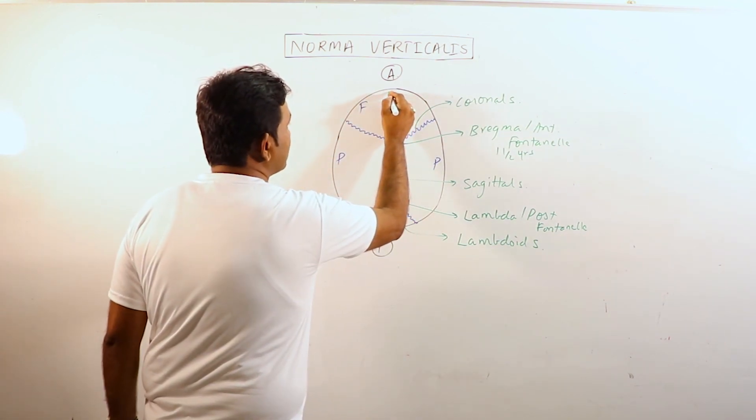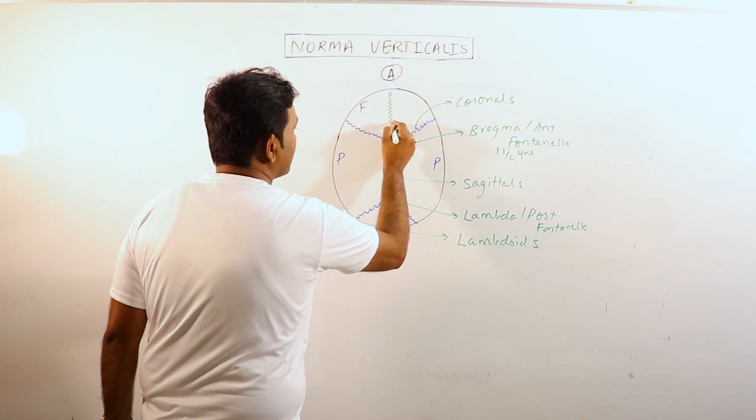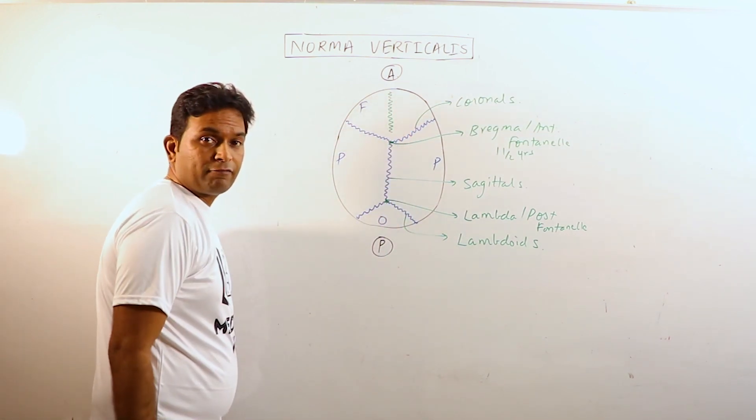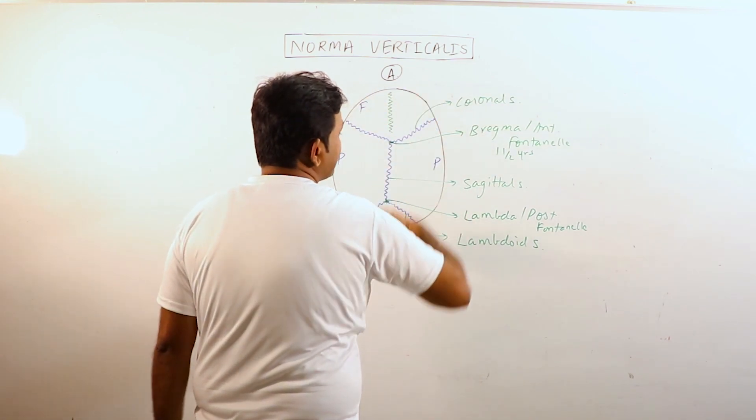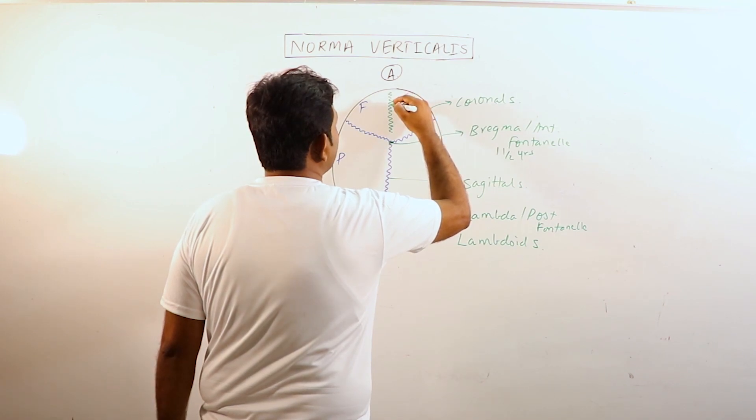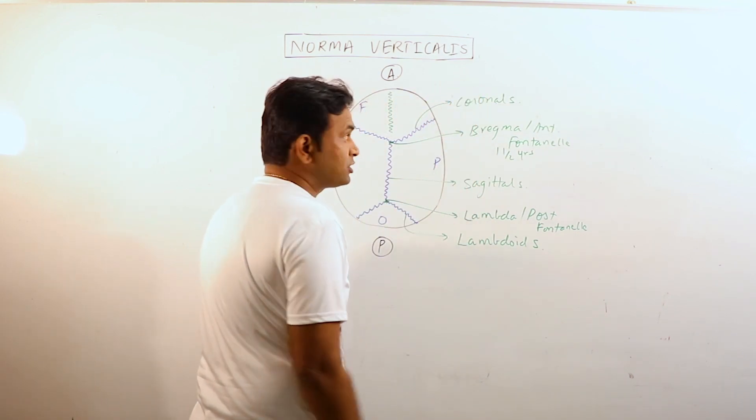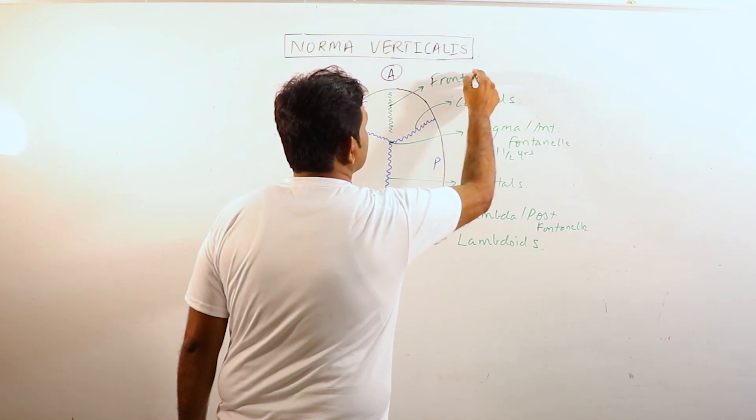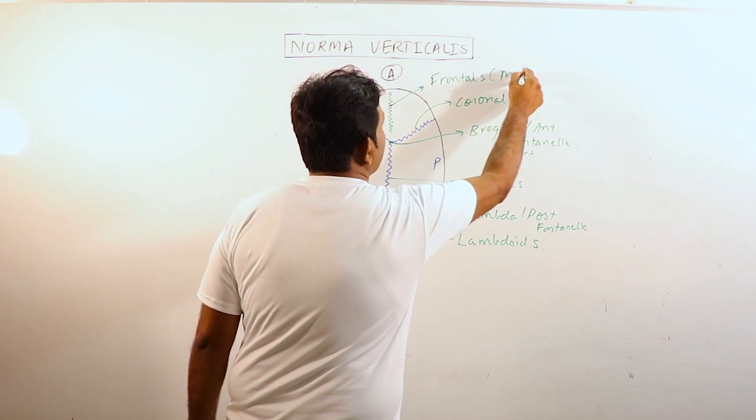Sometimes you may observe a suture which divides the right and left part of frontal bones. It usually gets closed by 3 to 9 months of age but it may persist in some individuals which may vary from 3 to 8%. This is known as frontal suture. It is also known as metopic suture.